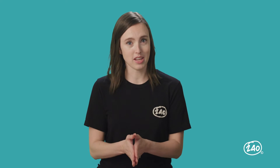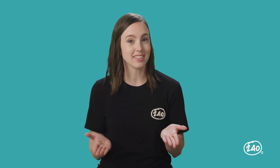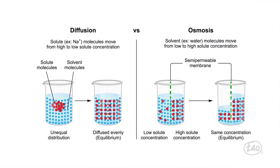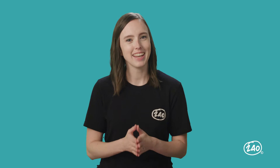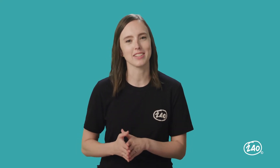Since this category makes up 20% of your exam, here's another key concept: the different modes of membrane transport. Diffusion and osmosis are both types of passive transport. In diffusion, ions or solutes move from an area of high solute concentration to an area of low solute concentration. In osmosis, water — the solvent — moves from an area of low solute concentration to an area of high solute concentration.